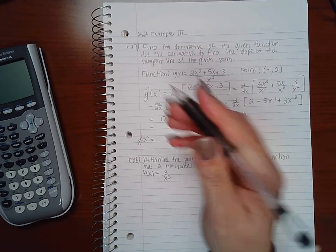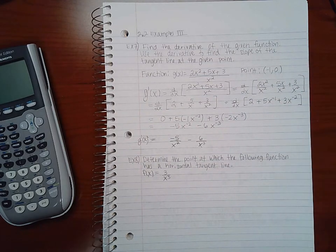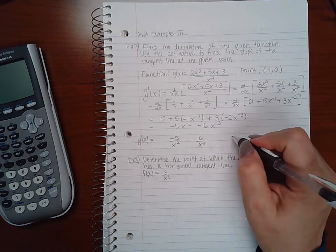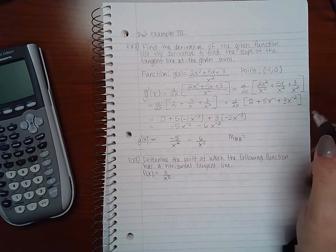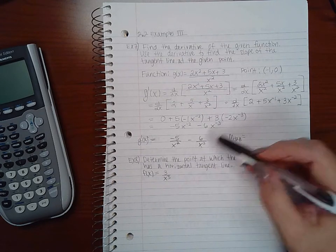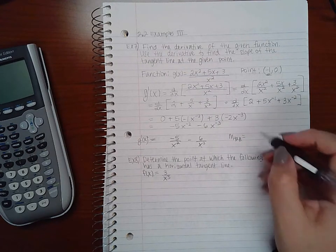Now it says for me to use this derivative to find the slope of the tangent line. So that means that m tangent is going to equal this expression evaluated when x is equal to 1.